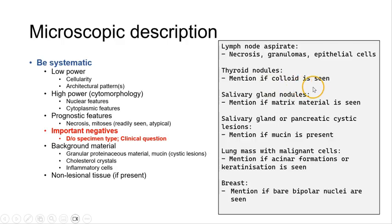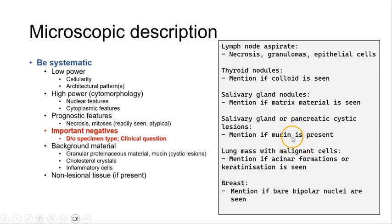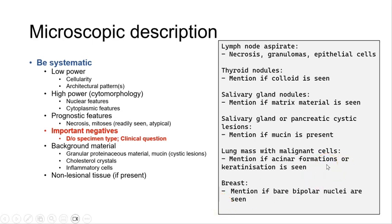In a thyroid nodule, whether or not colloid is seen and the amount of colloid. In a salivary gland nodule, especially solid nodules, where the matrix material is seen. In a salivary gland or pancreatic cystic lesion, whether mucin is present — and particularly in the pancreas, whether the mucin is thick or thin. In a lung mass with malignant cells, especially without ancillary testing material, to mention if acinar formations are present or keratinization is seen, because management for adenocarcinoma may differ from squamous cell carcinoma. In the breast, to mention if bare bipolar nuclei are noted in the background, as their presence is often associated with benign breast lesions.